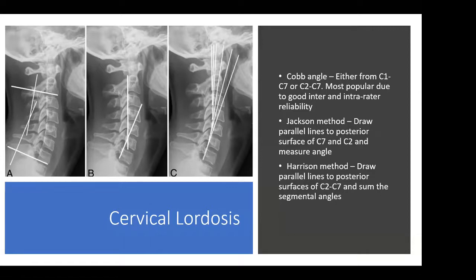There's also a Jackson method, which is also based on C2 and C7, but you're measuring parallel lines to the posterior surface of C2 and C7, and it's used less commonly. The Harrison method is perhaps the most accurate in terms of determining overall cervical lordosis. However, it's complex — you have to draw parallel lines to the posterior surface of every single vertebra and then sum the segmental angles, so it's really not used in practice a lot.